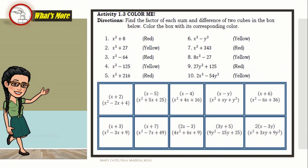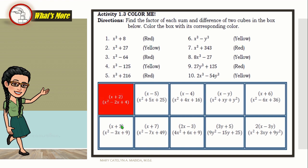What's more? Now, it's your turn. Activity 1.3: Color me. Find the factor of each sum and difference of two cubes in the box below. Here. Color the box with its corresponding color. So, we have x cubed plus 8. We color it red. And the factors of x cubed plus 8, that is right. And we color it red. Now, you have nine more numbers to work on.